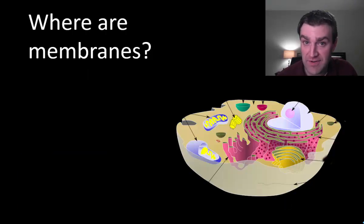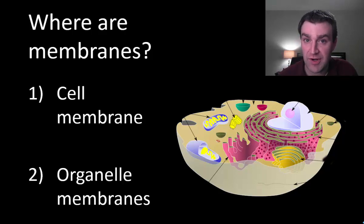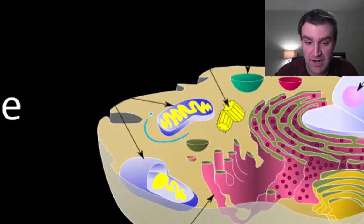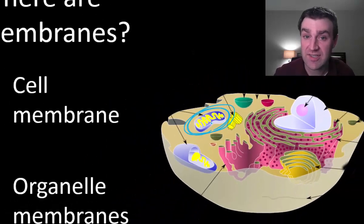If we think about where we find membranes first, certainly all cells have a cell membrane to control what goes in and out of the cell. But also eukaryotic cells have membranes in their organelles or around their organelles. So the mitochondrion, for example, right here has a membrane so that it can control what goes in and out of the mitochondria itself.